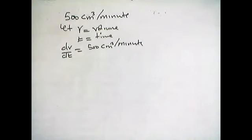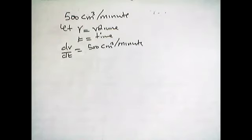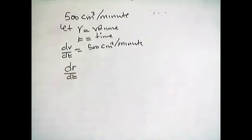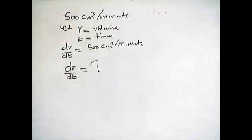The next part asks: how fast is the radius of the balloon increasing? So we are asked to find the change in radius over change in time — dR/dT. To know how fast it is increasing we look at the change in radius against change in time. That's what we are looking for.